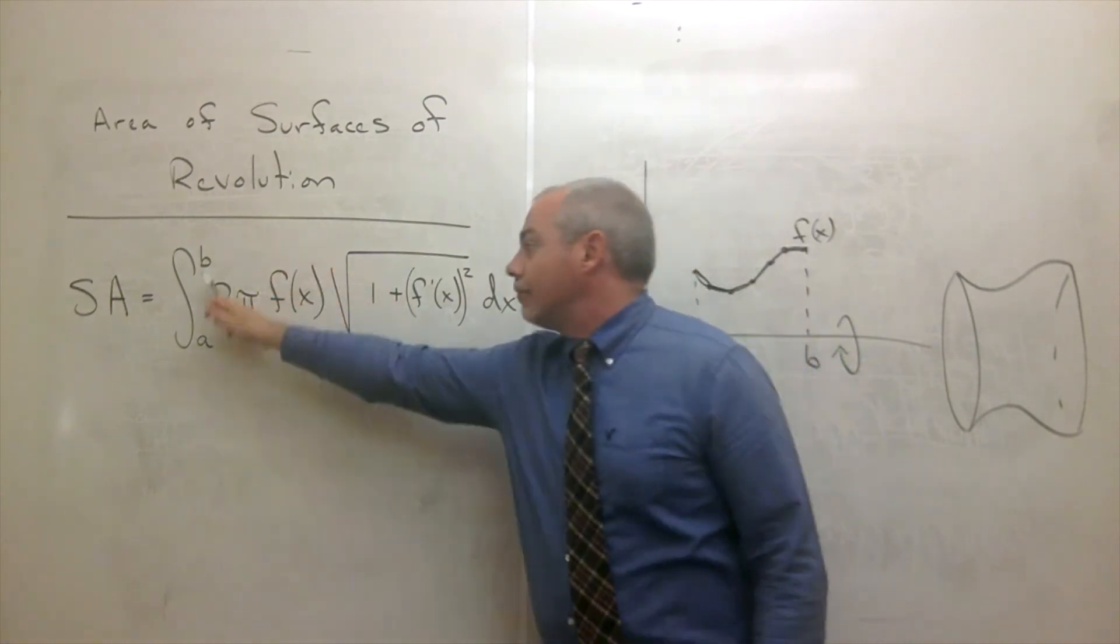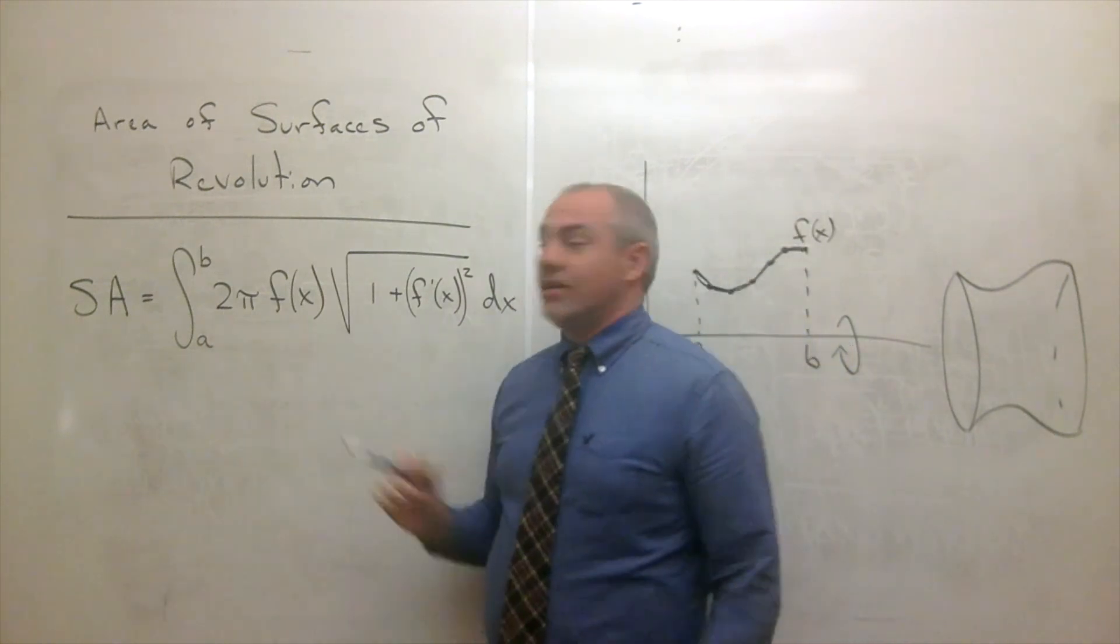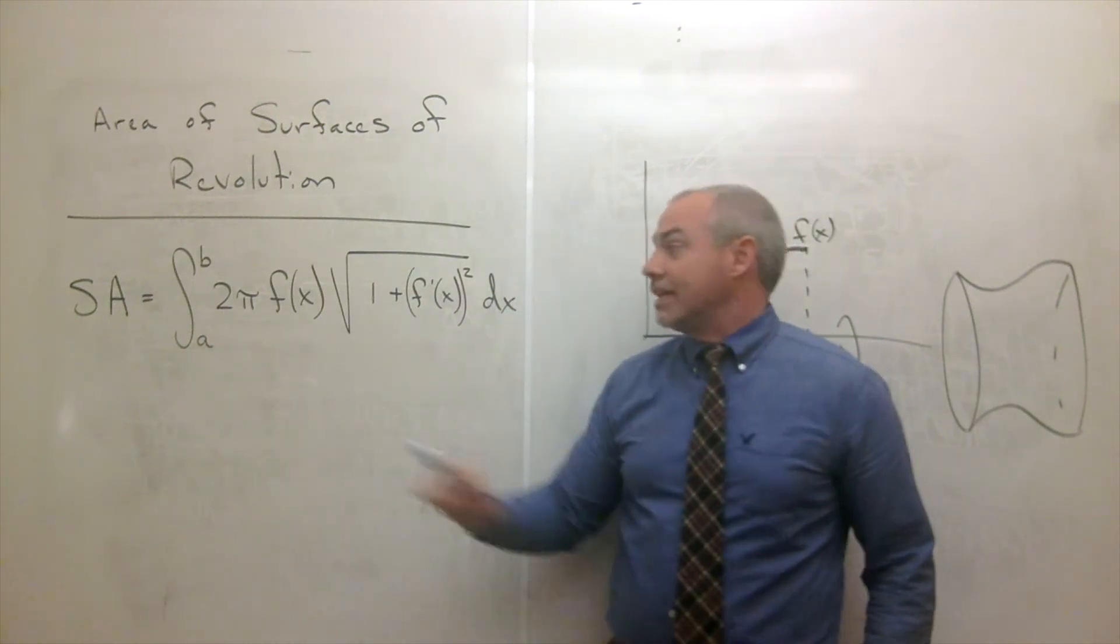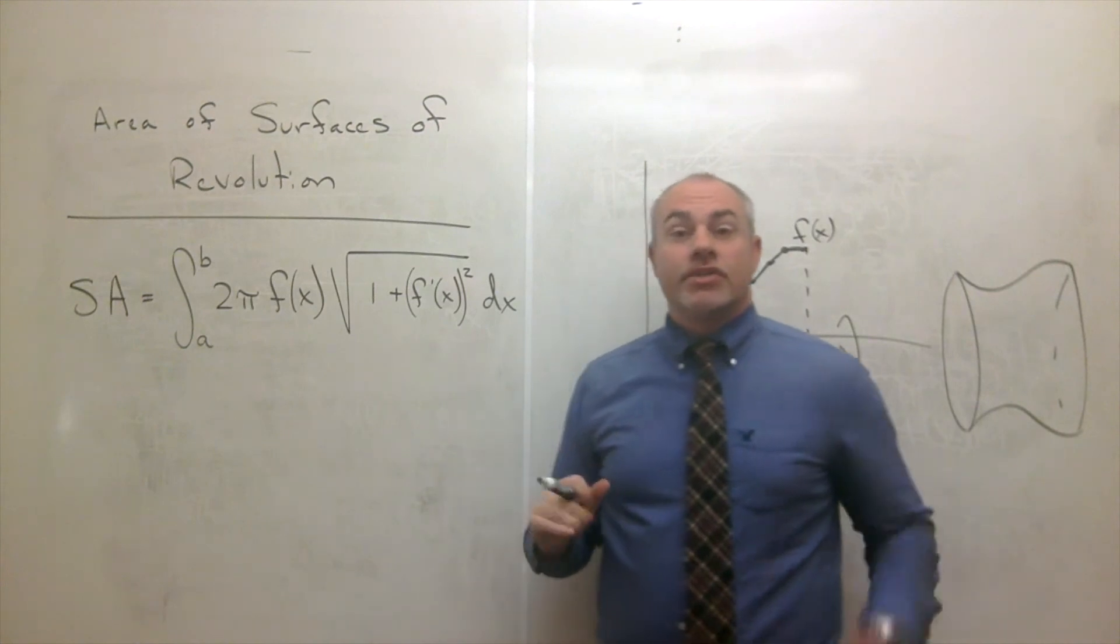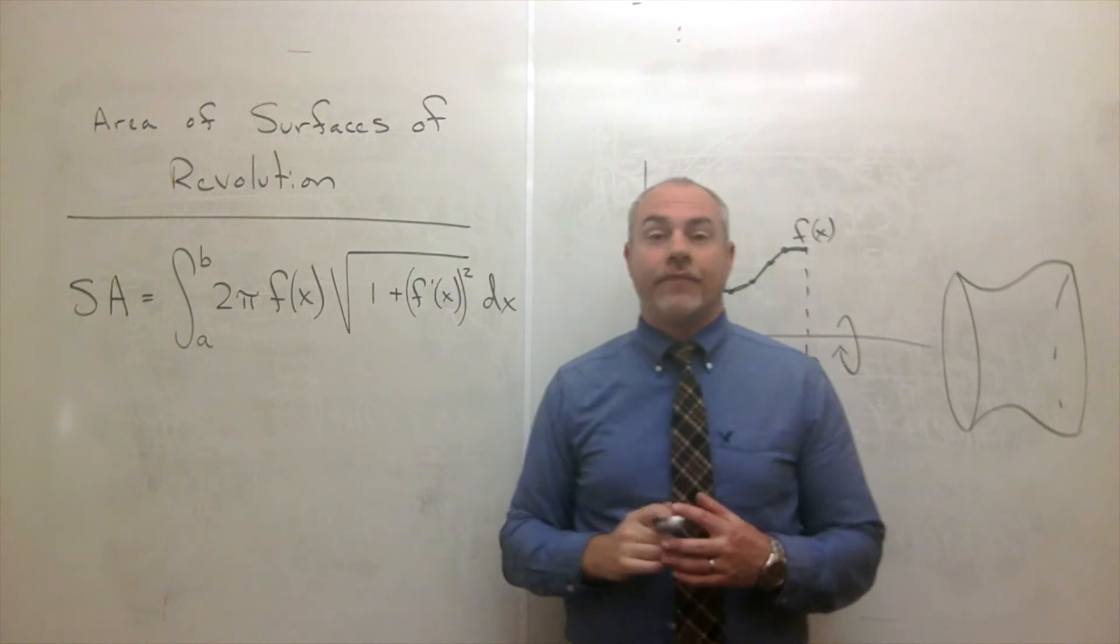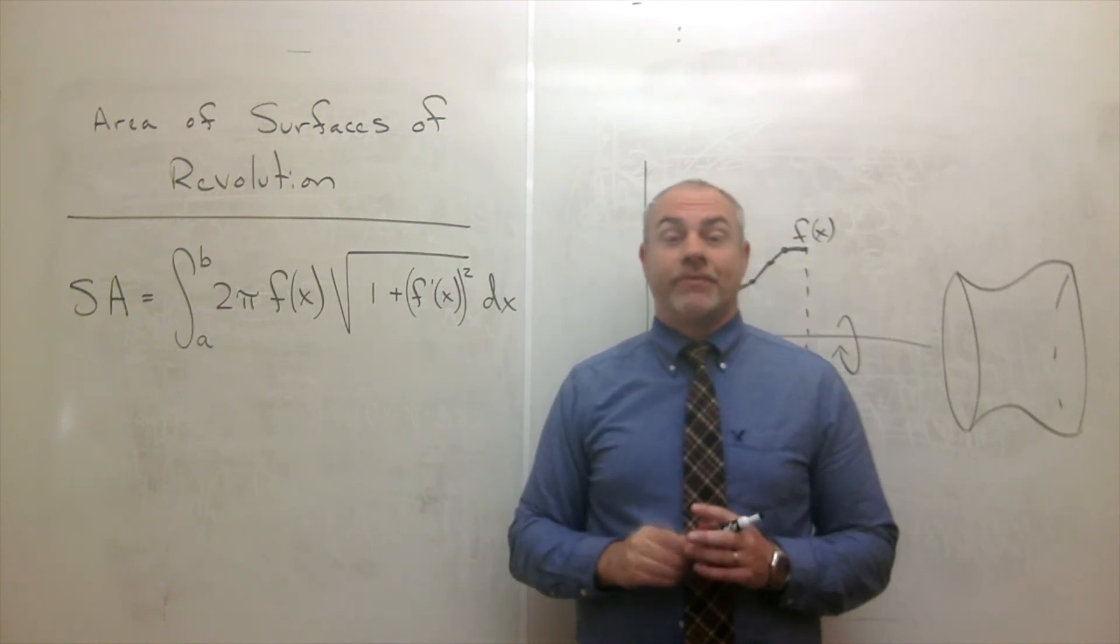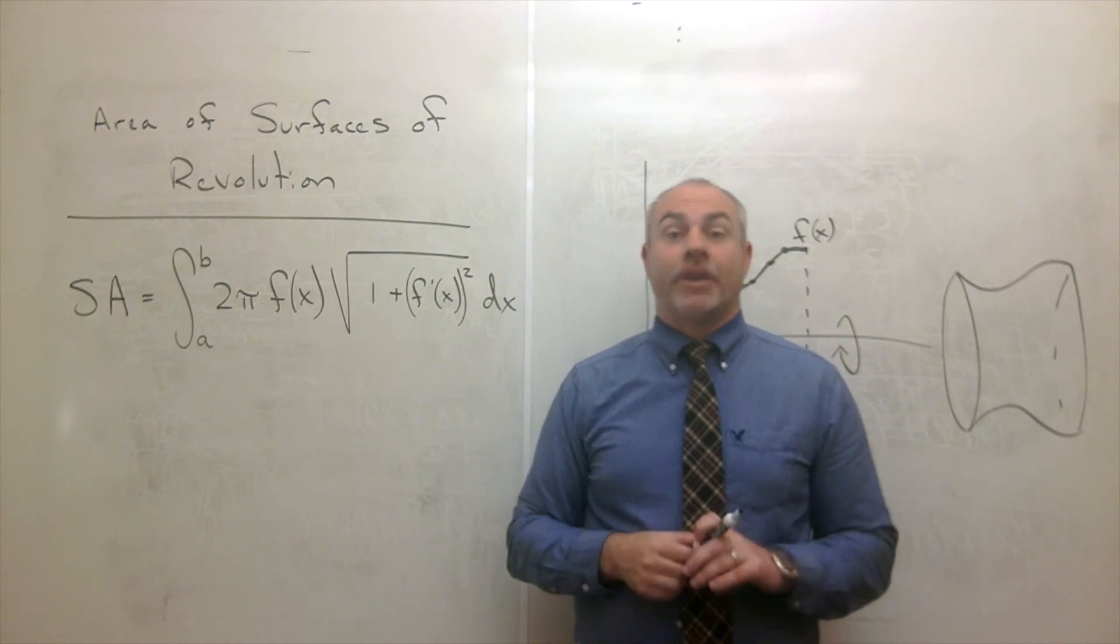So this formula in some ways makes sense. We've got a length times a circumference inside of our integral. So now it's time to look at some examples of how do we use this surface area formula to find surface area. So go ahead and watch some of the example problems and get a better feel for that.